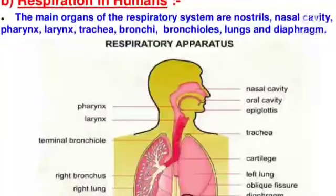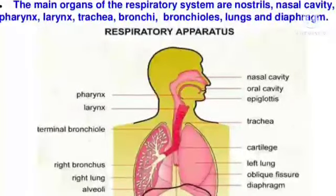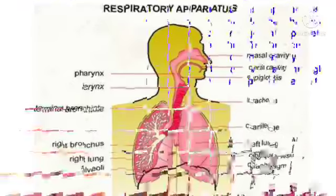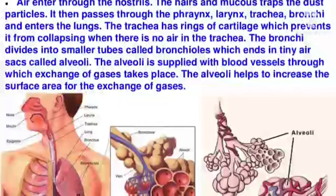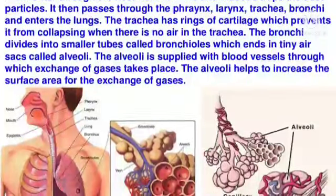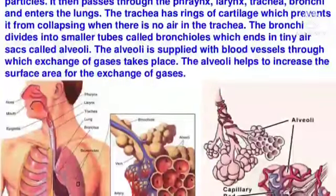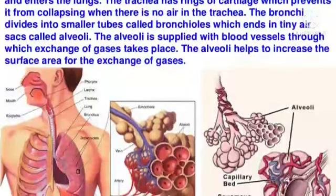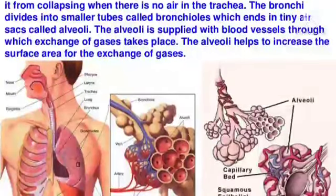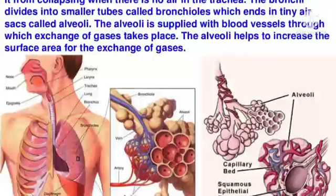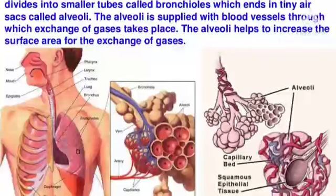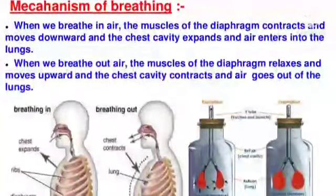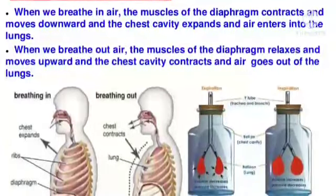The main organs of the respiratory system are the nostrils, nasal cavity, pharynx, larynx, trachea, bronchi, bronchioles, lungs, and diaphragm. Air enters through the nostrils, where hair and mucus trap dust particles. It then passes through the pharynx, larynx, trachea, and bronchi into the lungs. The trachea has rings of cartilage which prevent it from collapsing. The bronchi divide into smaller tubes called bronchioles, which end in tiny air sacs called alveoli. The alveoli are supplied with blood vessels through which exchange of gases takes place, and they increase the surface area for gas exchange.